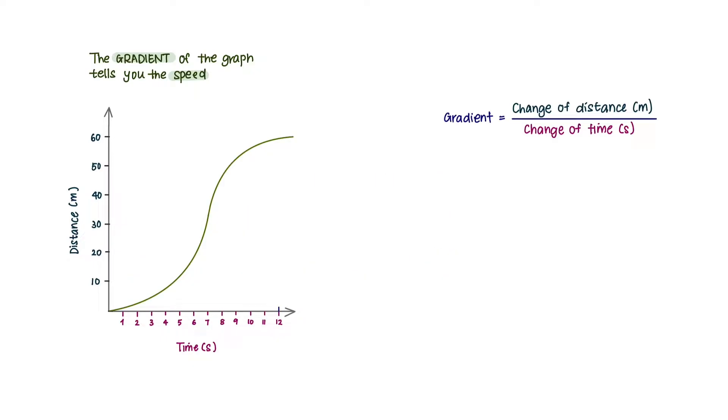This is an example of another trend for a distance-time graph. A curved line tells you the speed is changing. If the slope is increasing, the speed is increasing. If the slope is decreasing, the speed is decreasing.